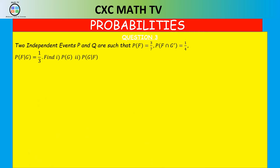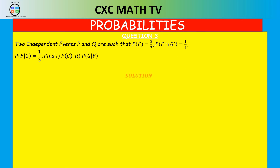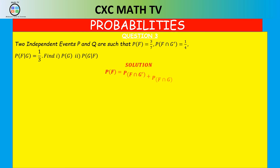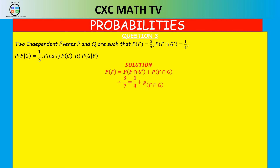The first thing we need to find is P(F∩G). Going back to the rules of probability: P(F) = P(F∩G') + P(F∩G). Substituting: 3/7 = 1/4 + P(F∩G). Transposing, P(F∩G) = 3/7 − 1/4 = five over 28. So P(F∩G) = 5/28.